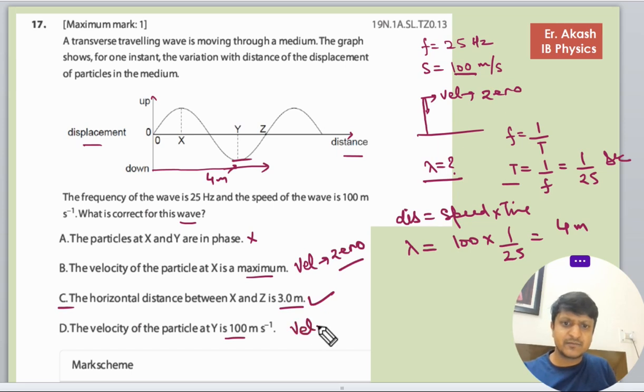Here also the velocity will be 0 because this is the extreme position. After being 0, it will first come there and then it is now moving back. So only C option is the right option.